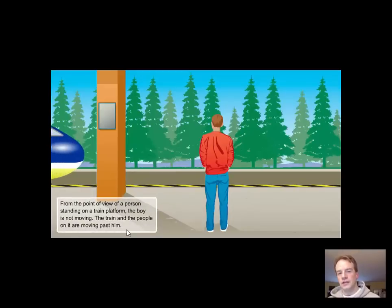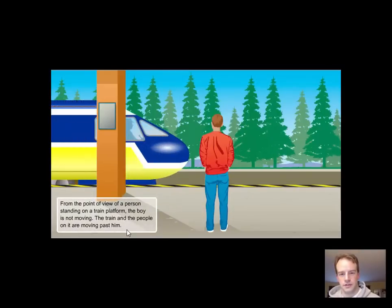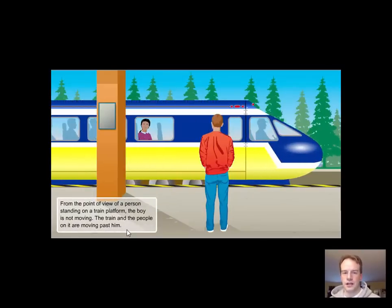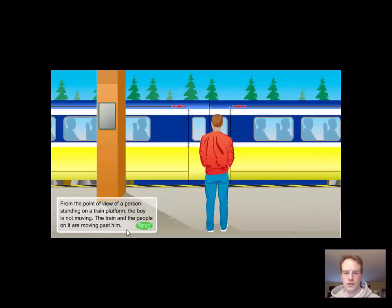So this is all about perspective. If you are on the train, that girl relative to you is not moving, and that boy is moving past you. But for him, he is not moving, but she is.